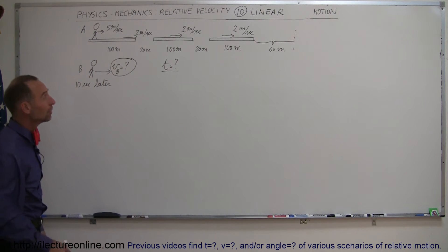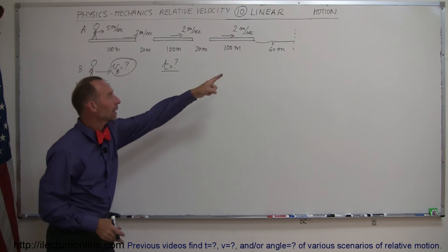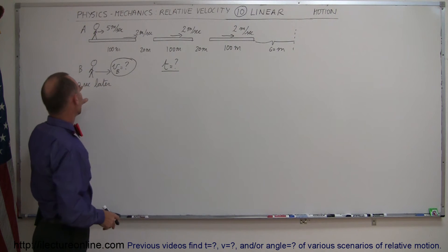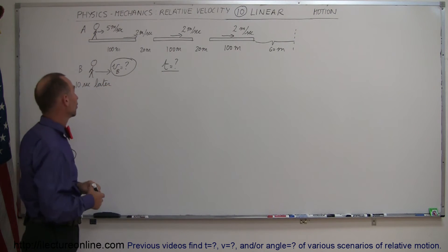All right, how do you do that? Well I think what we should do is try to figure out how long it takes for passenger A to get to the boarding area, such that we can then say that passenger B will have 10 seconds less and then we can figure out how fast passenger B has to run. All right, so how long does it take? Well let's see here.